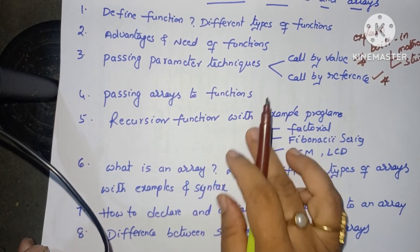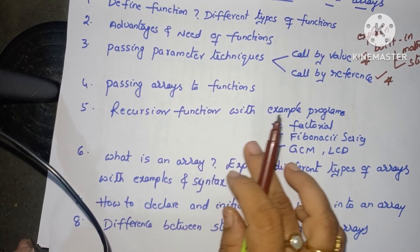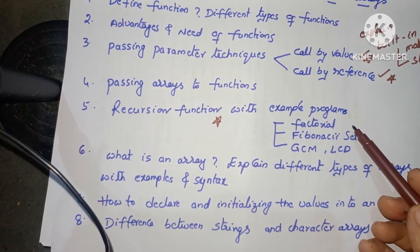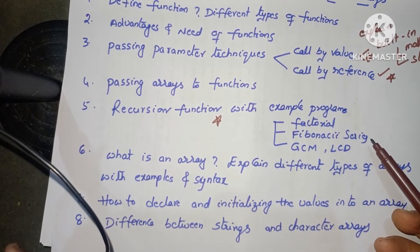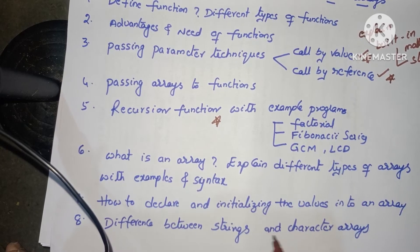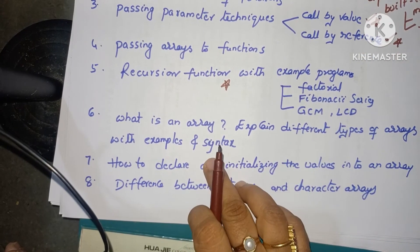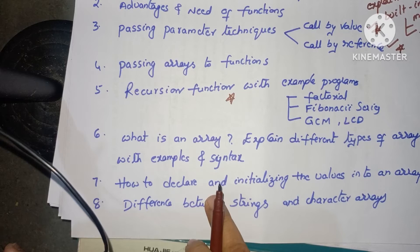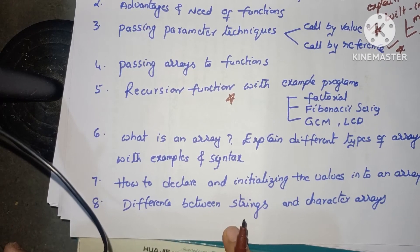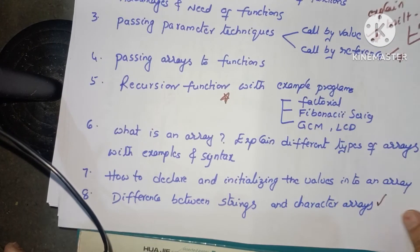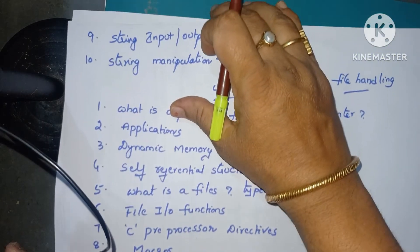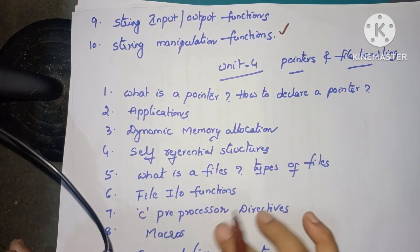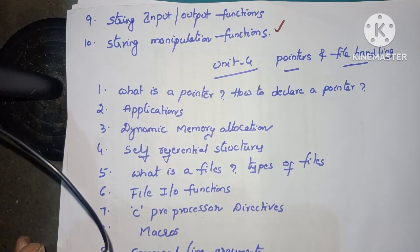Next: 'Passing arrays to functions.' Then: 'What is a recursion function? Explain with an example program' — very very important question. Example programs include factorial using recursion, Fibonacci series using recursion, and GCD/LCM of two numbers using recursion. Next: 'What is an array?' and 'Explain different types of arrays with syntax and examples.' How to declare and initialize array values. Also: difference between string and character arrays, string input/output functions, and string manipulation functions — string length, reverse, copy, character functions.